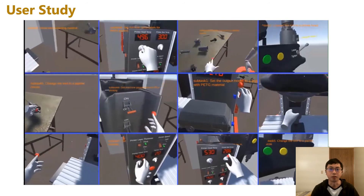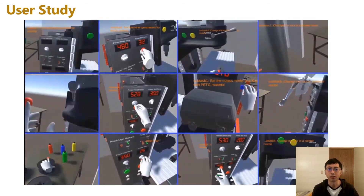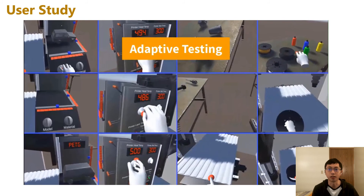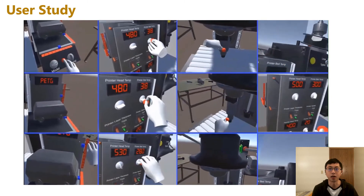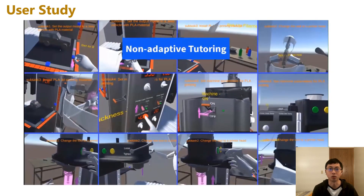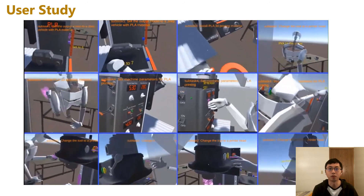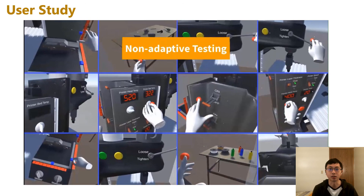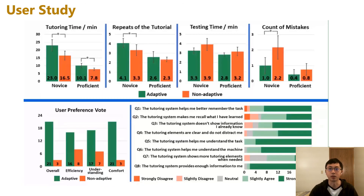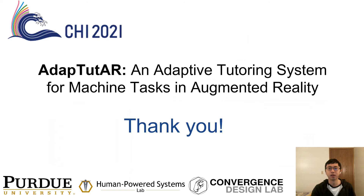To evaluate the performance of the adaptation model, we conducted a two-session remote user study in VR. 24 users learned two machine tasks using AdaptTutor and a non-adaptive system as the control group. The non-adaptive tutorial shows all four tutoring elements to users all the time. Users first learned the tasks following the tutorials and then did a test without tutorial help. The results show the adaptive tutorial leads to a better learning outcome in terms of completion time and mistakes. Please refer to the paper for more details. Thank you.